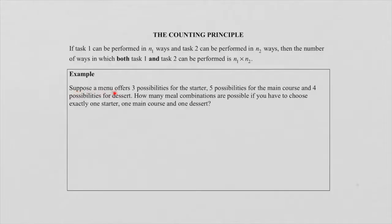Suppose a menu offers three possibilities for a starter, five possibilities for a main course, and four possibilities for a dessert. How many meal combinations are possible if you have to choose exactly one starter, one main course, and one dessert?